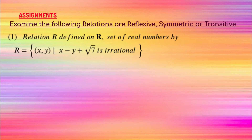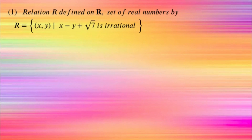The first question: the relation R defined on a set of real numbers by R equal to the set of all (x, y) such that x minus y plus √7 is irrational.